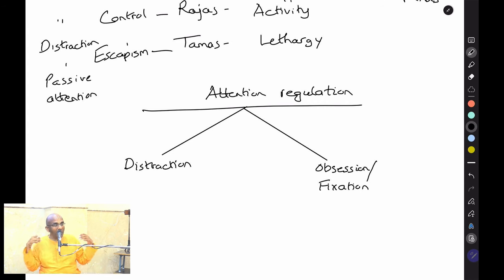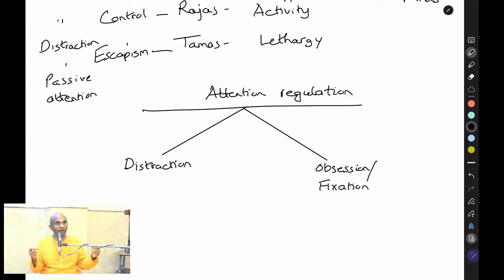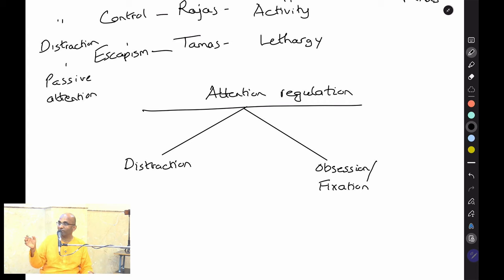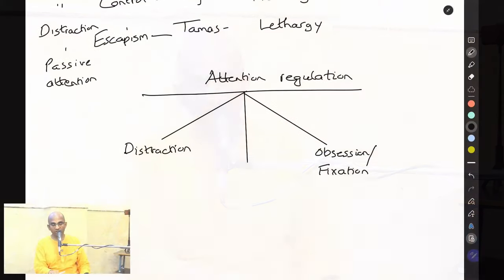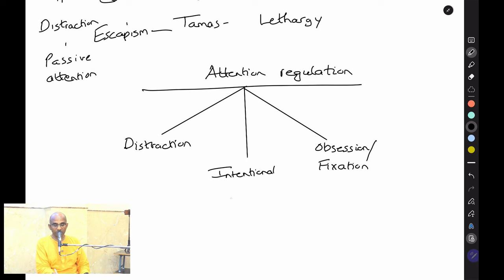Sometimes people's attention gets caught in one thing, becoming completely oblivious of their environment — unintentionally. When fixated, we get caught and don't even realize we're caught. Consider someone driving a car while watching a movie on their phone — they get so caught in the movie they don't watch traffic. Distraction means the mind runs everywhere; fixation means the attention is lost somewhere we didn't intend. The best outcome in attention regulation is intentional focus — active attention.